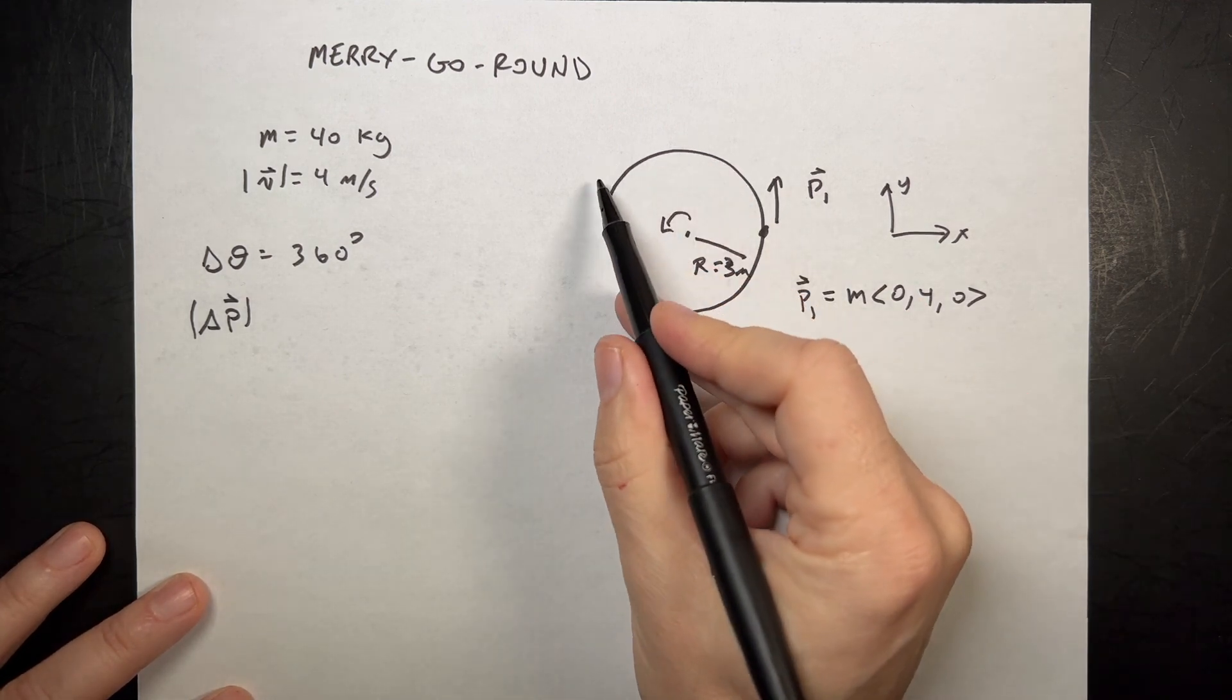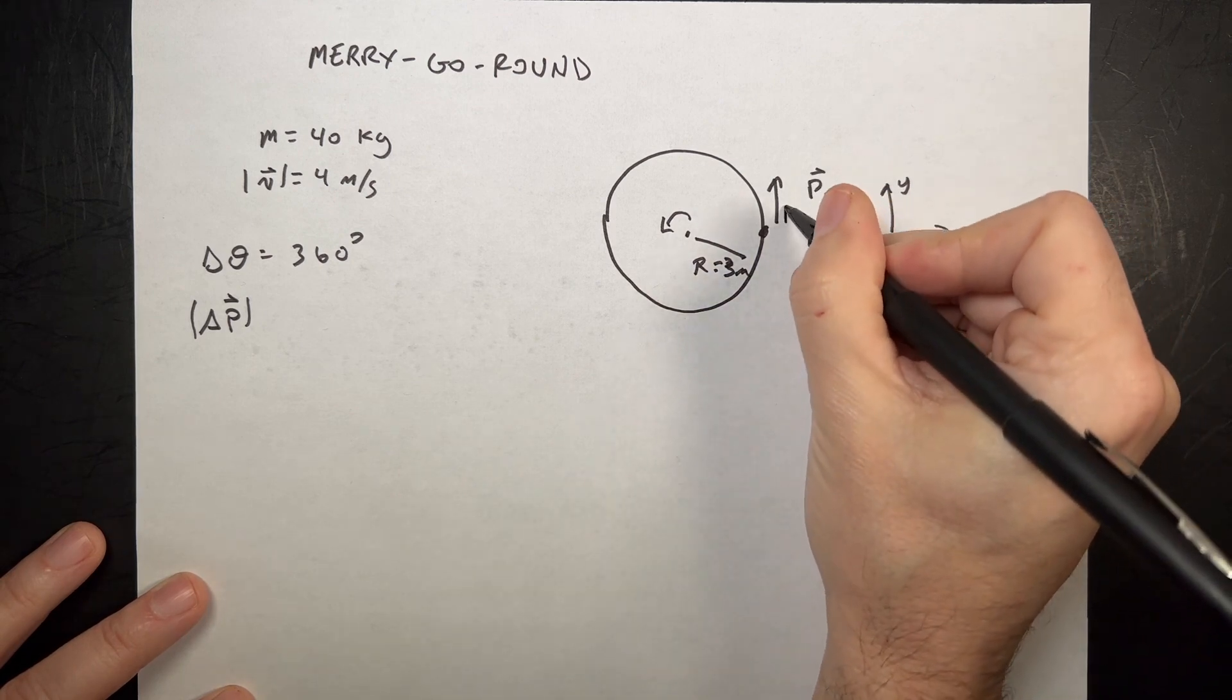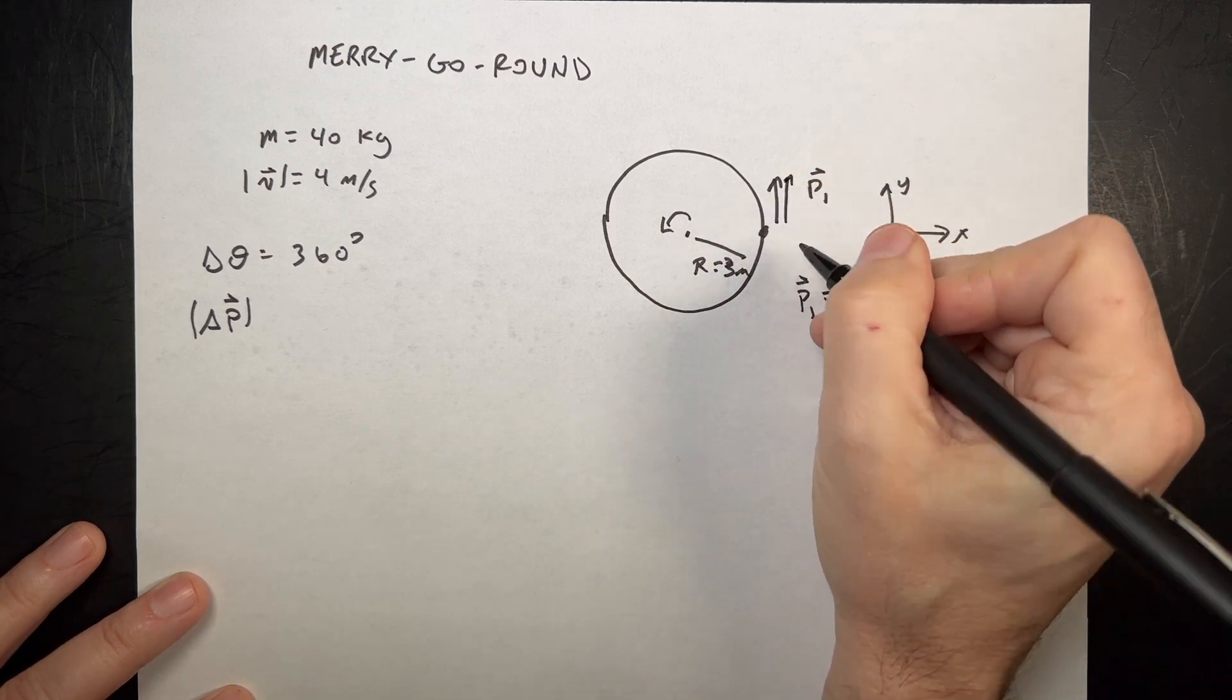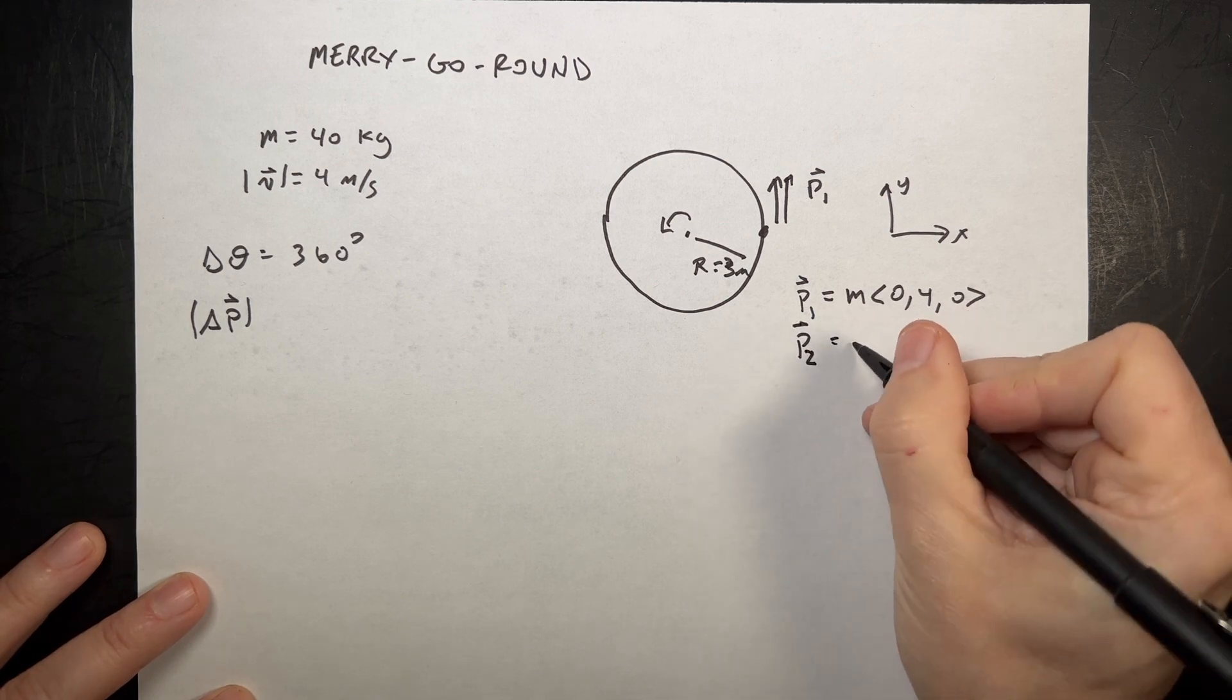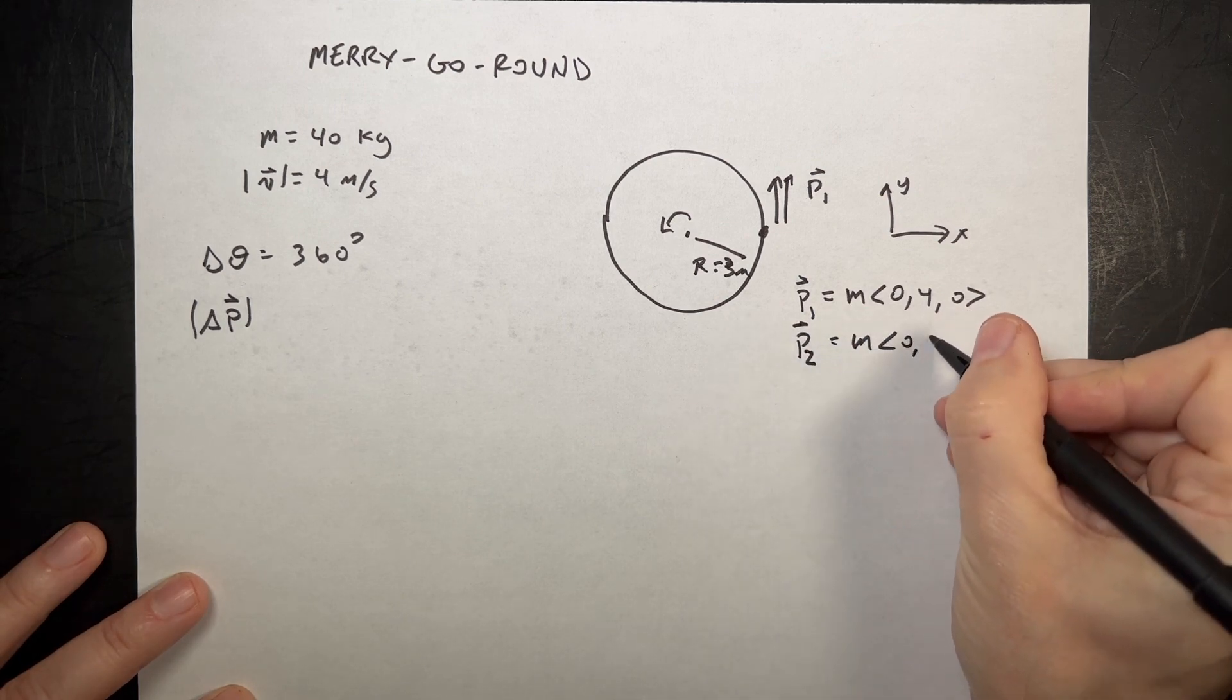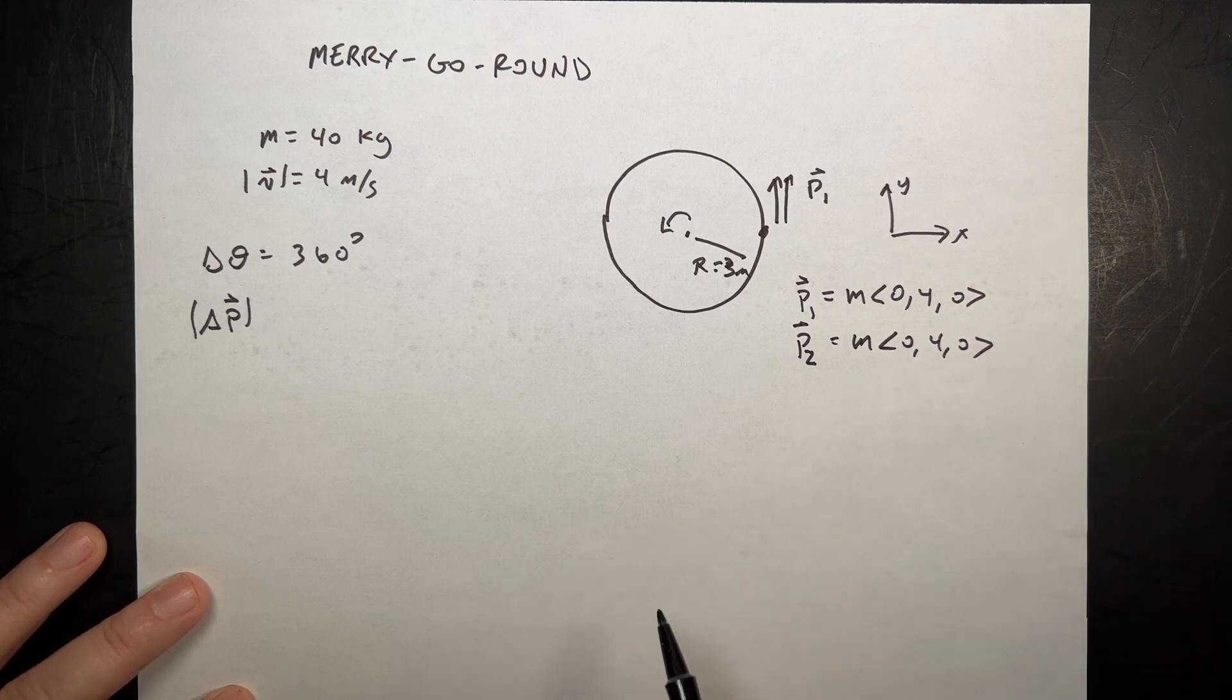Once around, all the way around, you get over to here, P2. So P2 is the same thing. M, 0, 4, 0. And I'll put the numbers in in just a second.